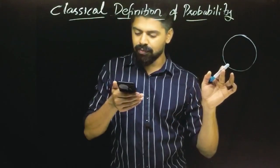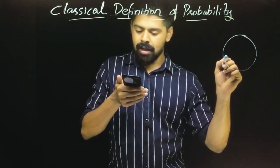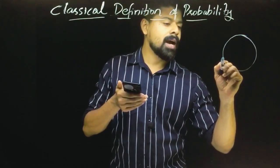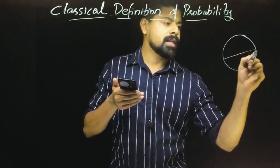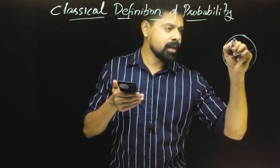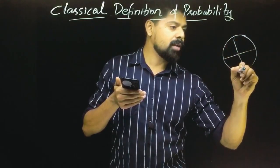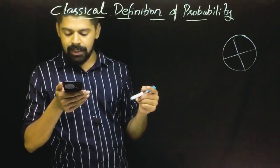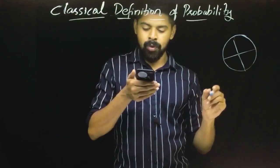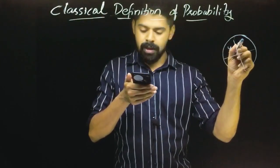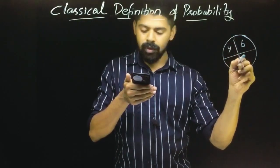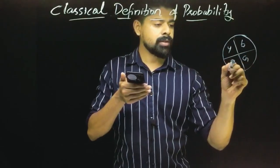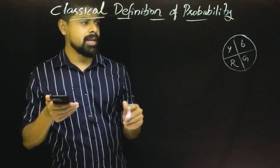This spinner is divided into 4 equal sectors: 1, 2, 3, 4. The colors are: one is yellow, one is blue, one is green, one is red. These are the 4 colors.